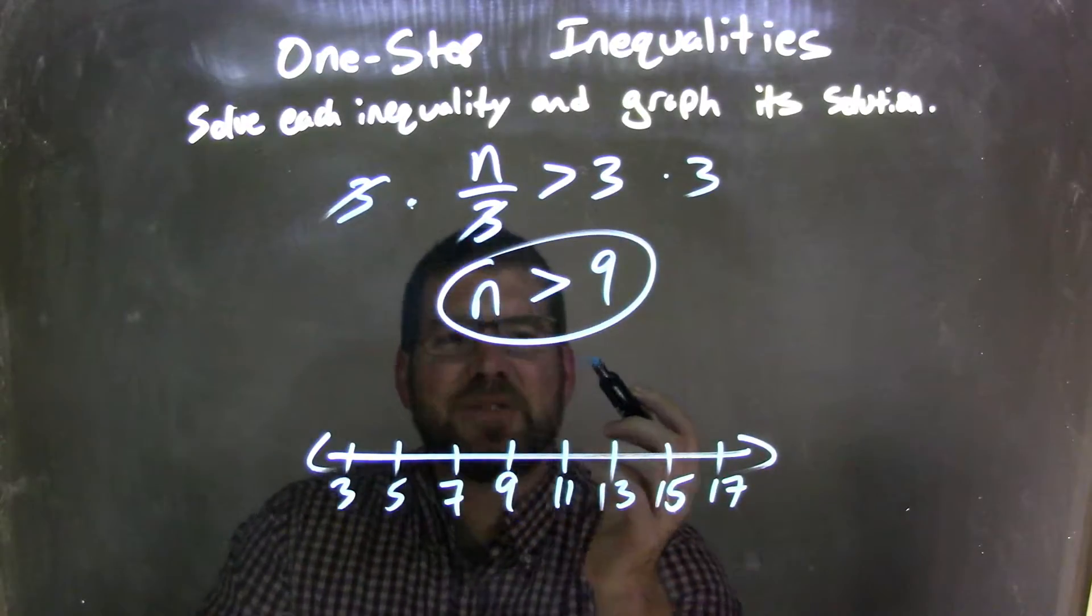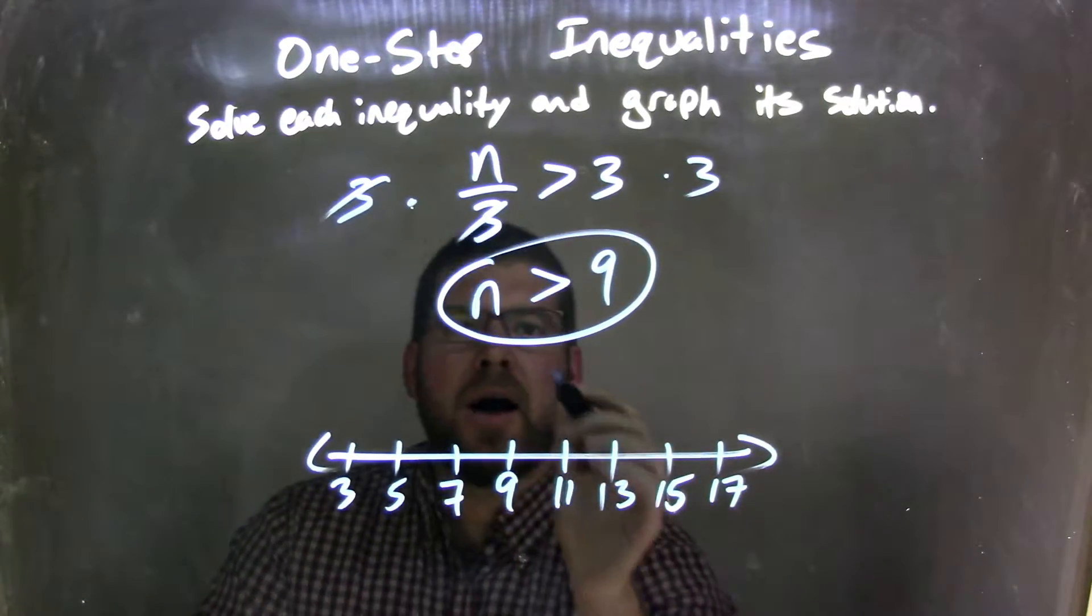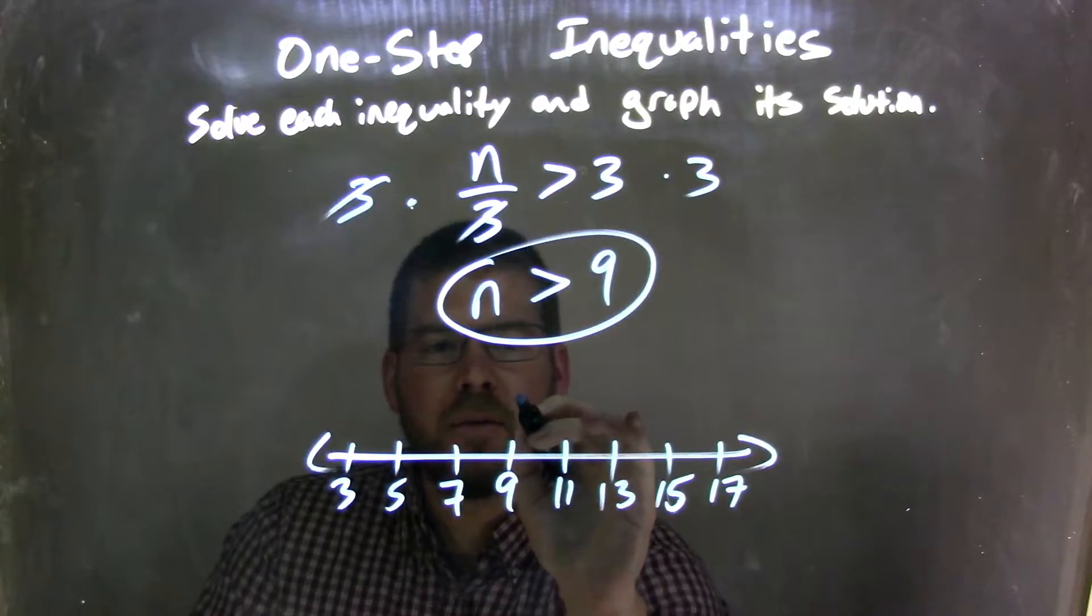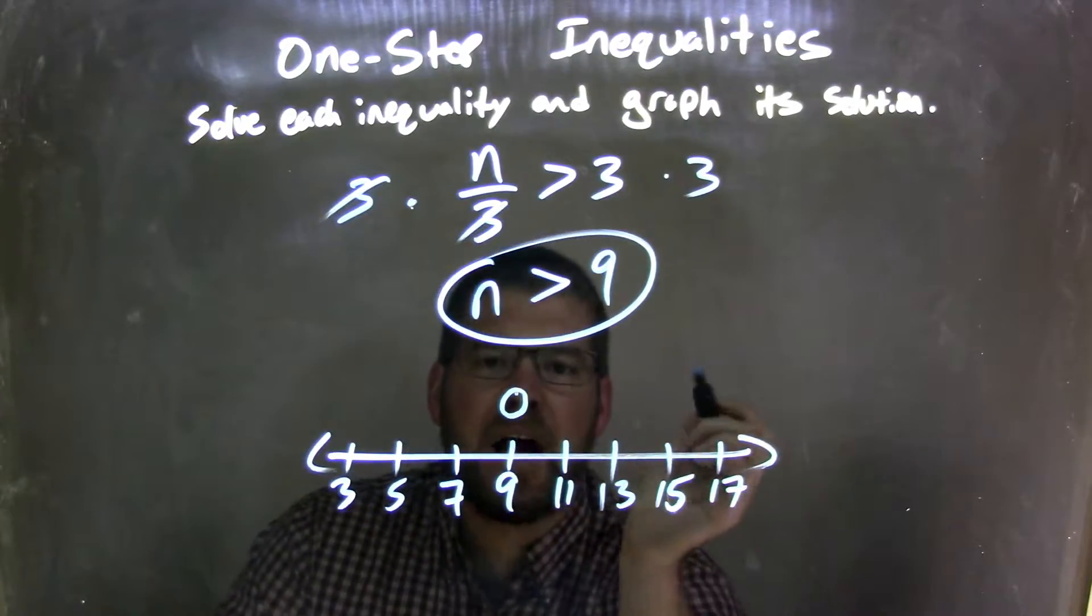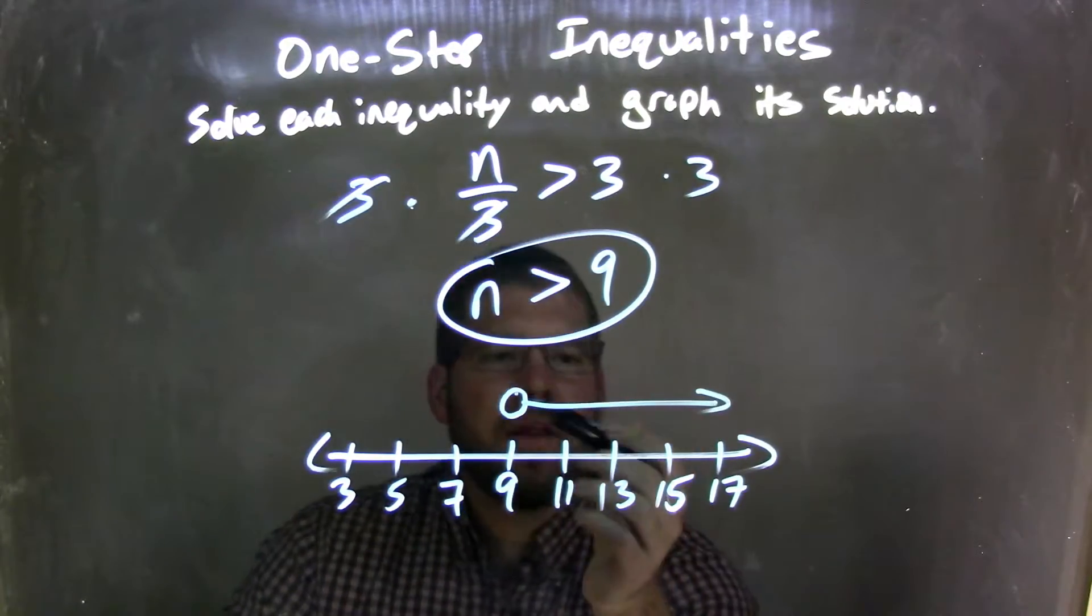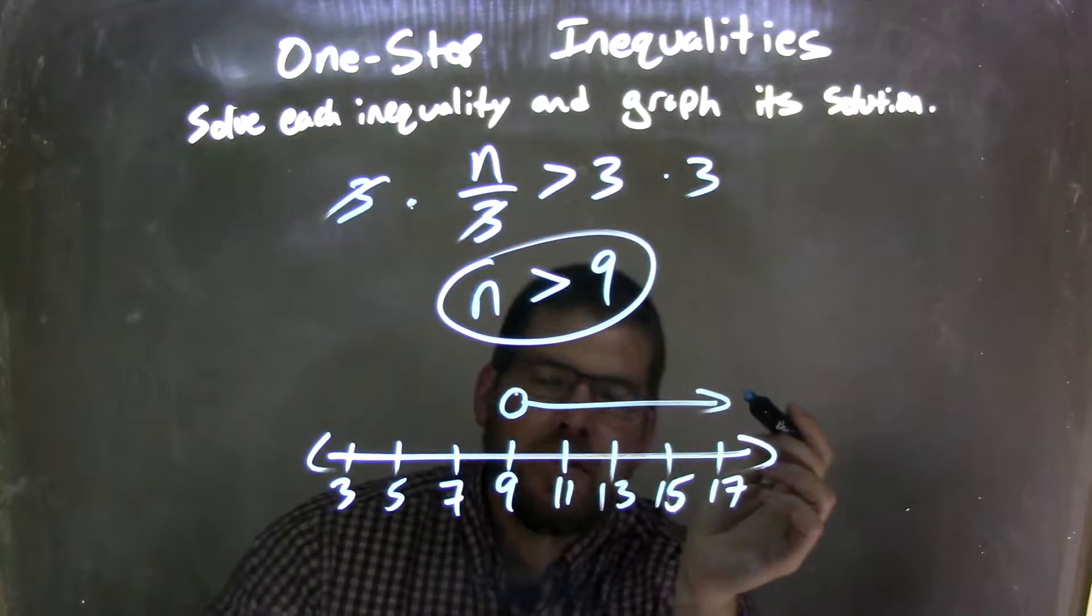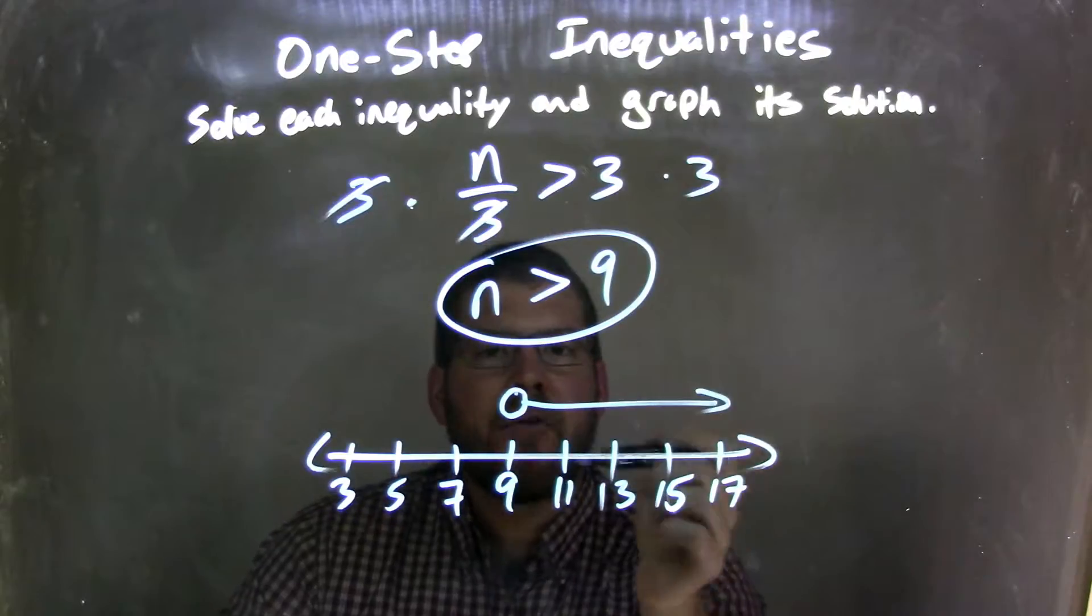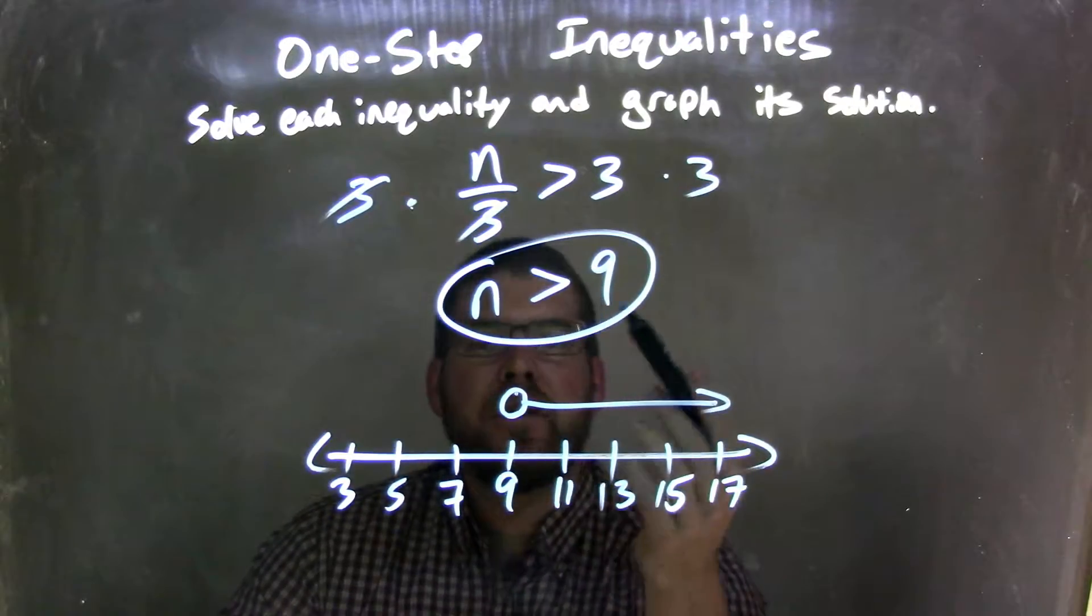So if I want to graph n is greater than 9 here, I have an open circle because it's not equal to 9, just an open circle at 9. And the greater than sign puts the arrow to the right. So we have greater than 9, open circle, arrow to the right, and there we are. That graph matches the inequality of n is greater than 9.